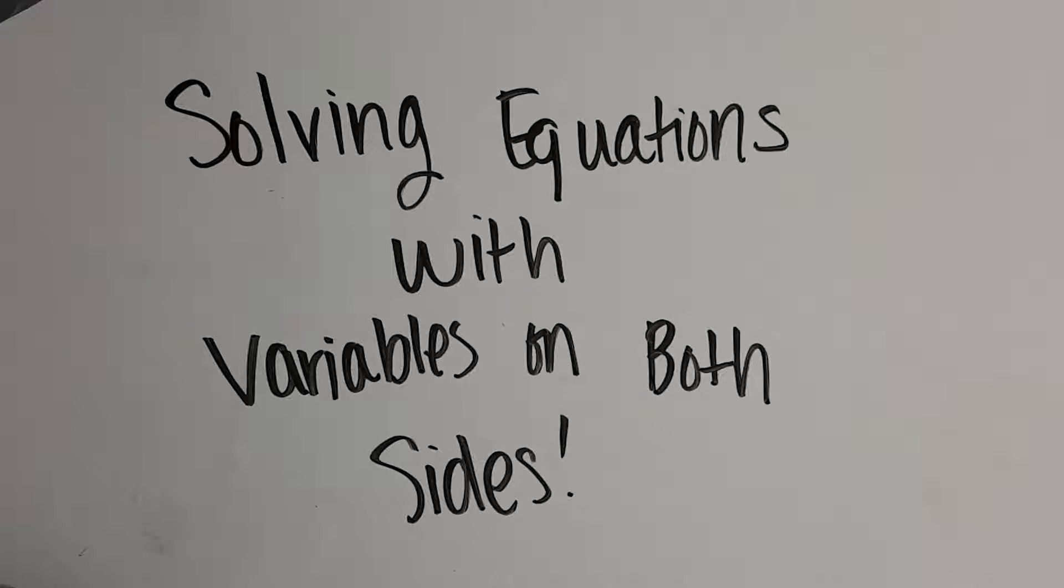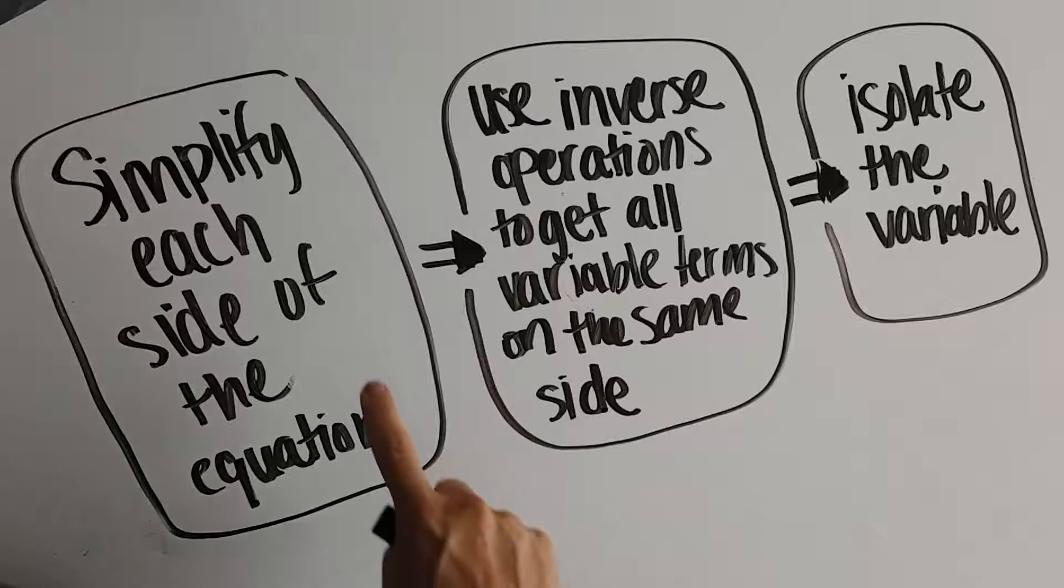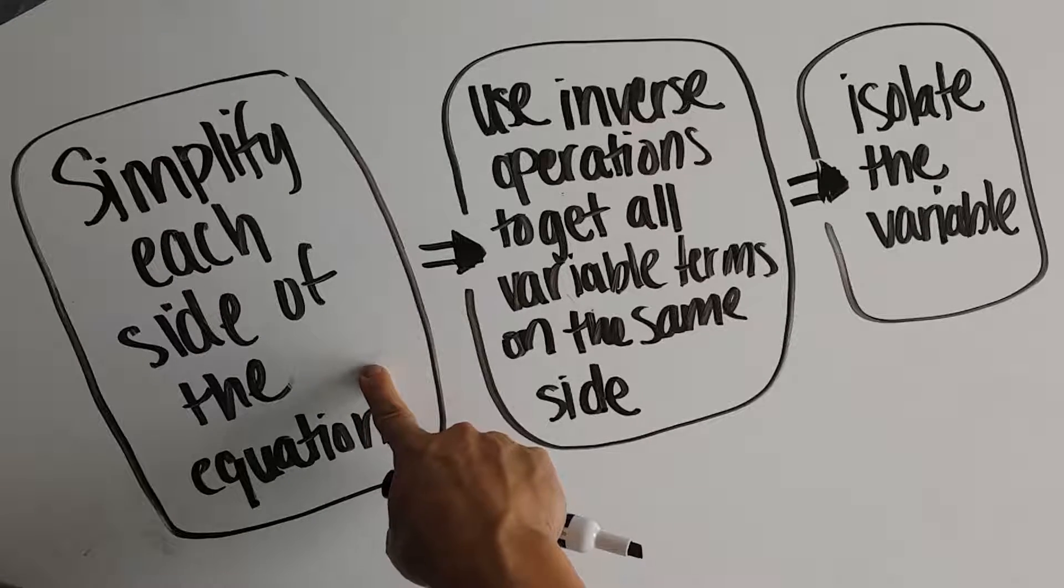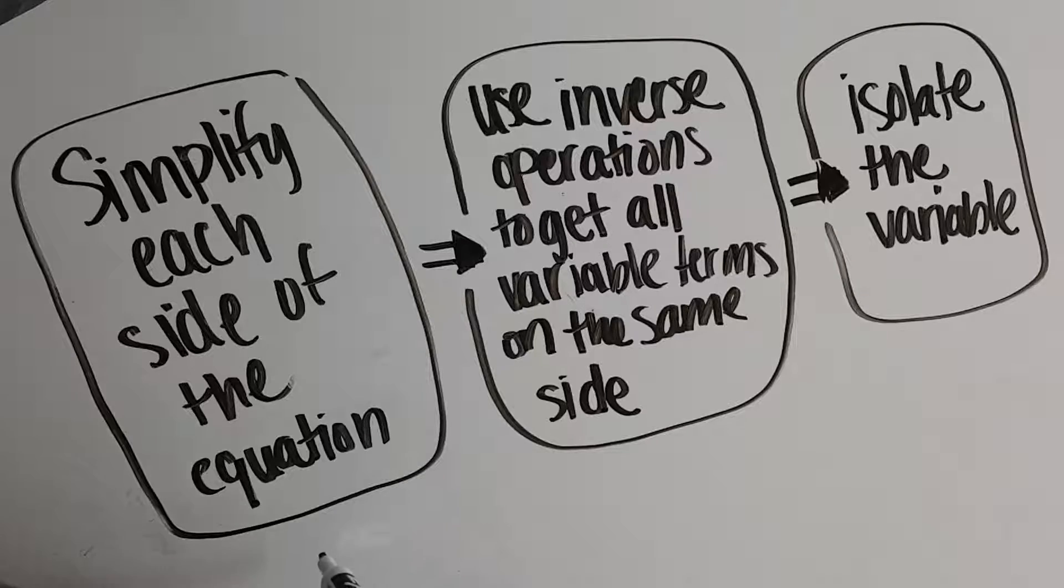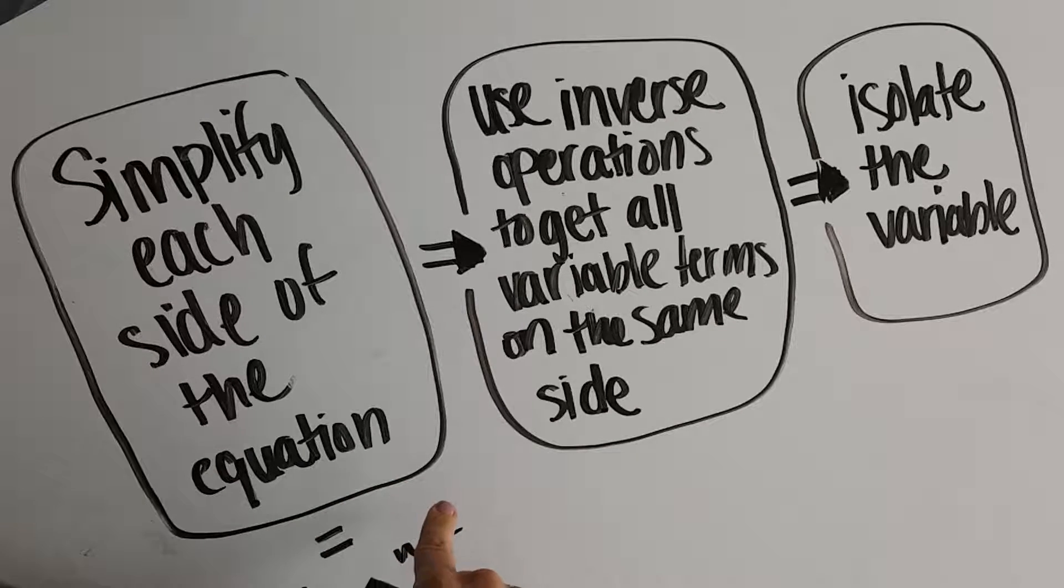We're going to talk about how to solve an equation when there are variables on both sides. When we solve linear equations with variables on both sides, our first step is to simplify each side of the equation. We know that this equal sign splits our equation into two equivalent expressions, so we want the left side to be simplified and the right side to be as simplified as possible.